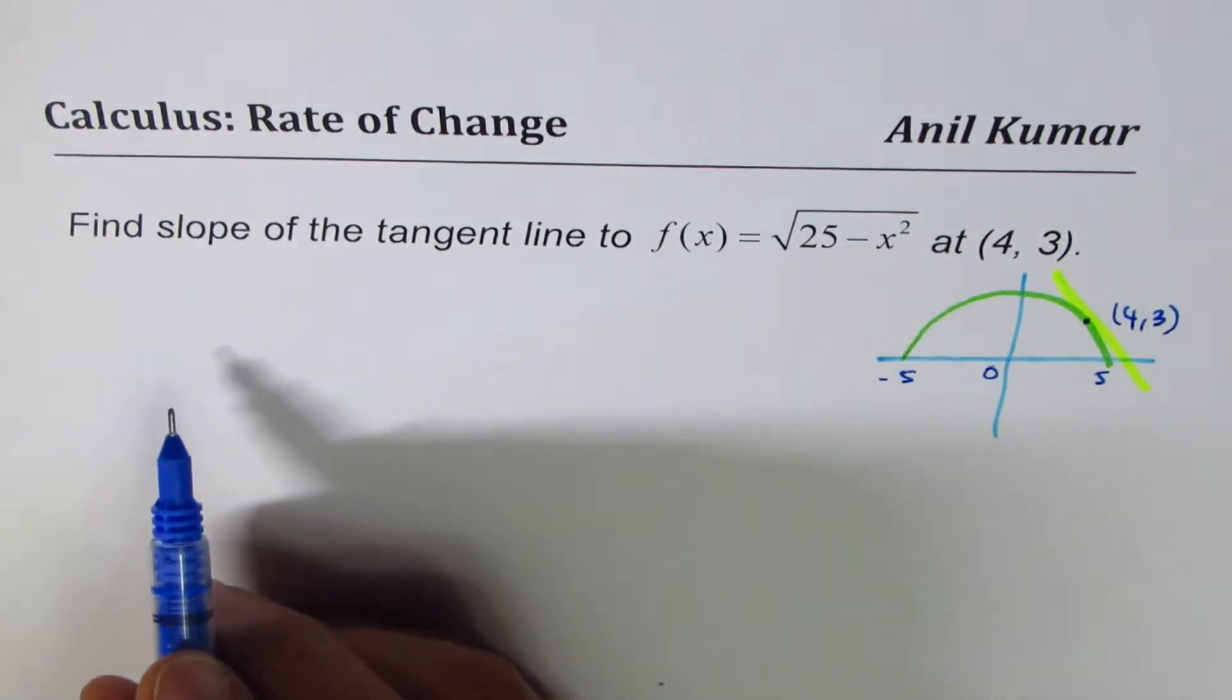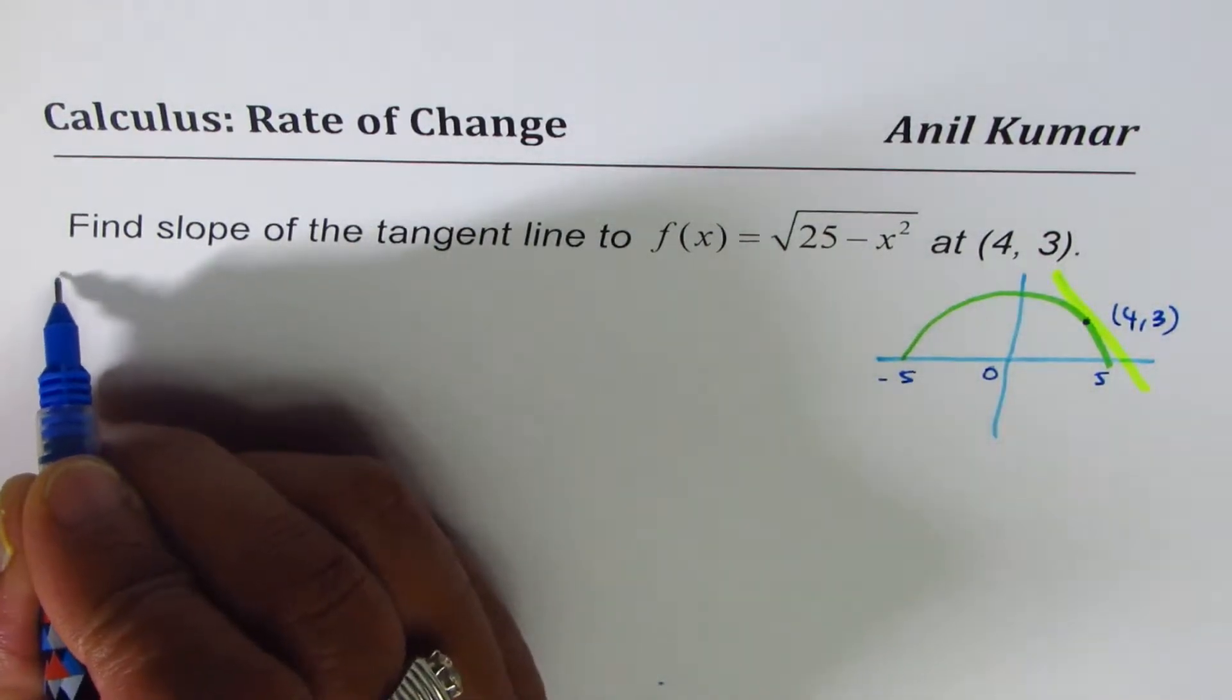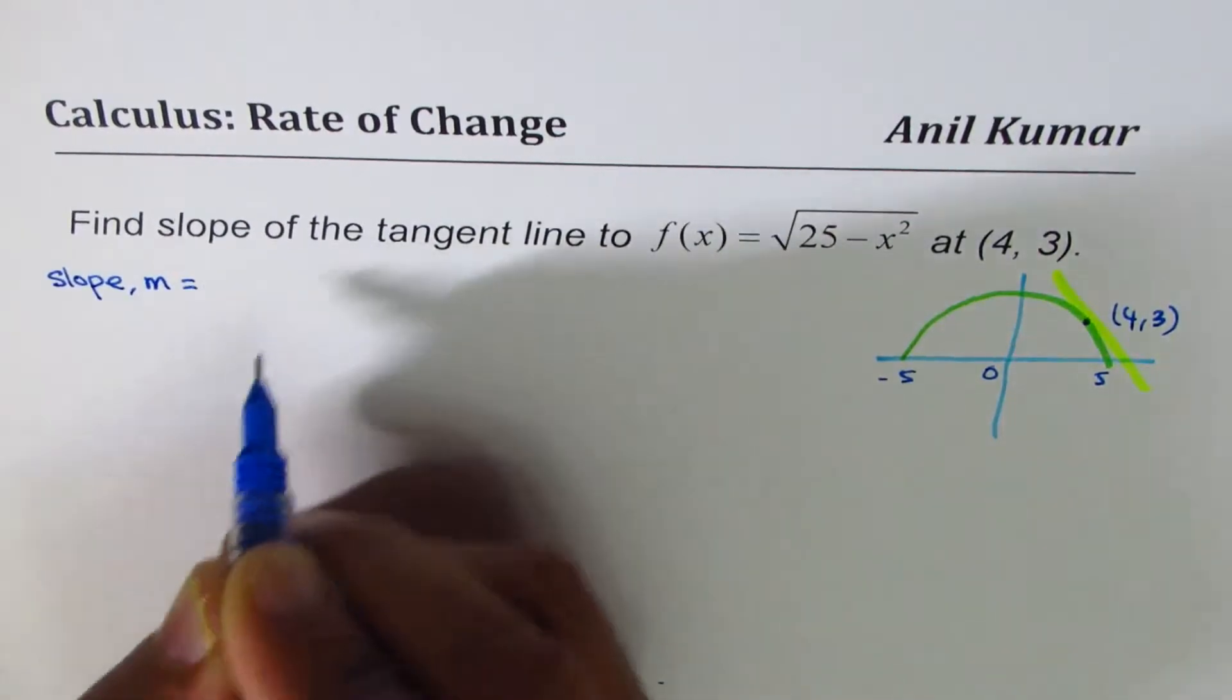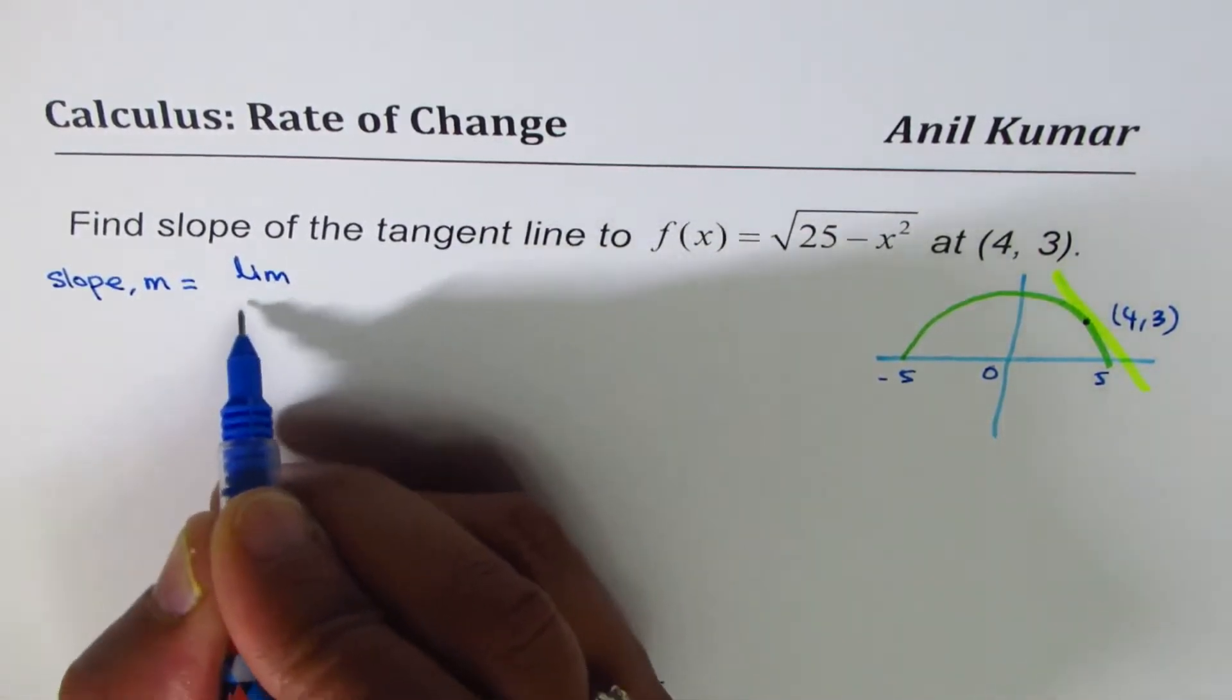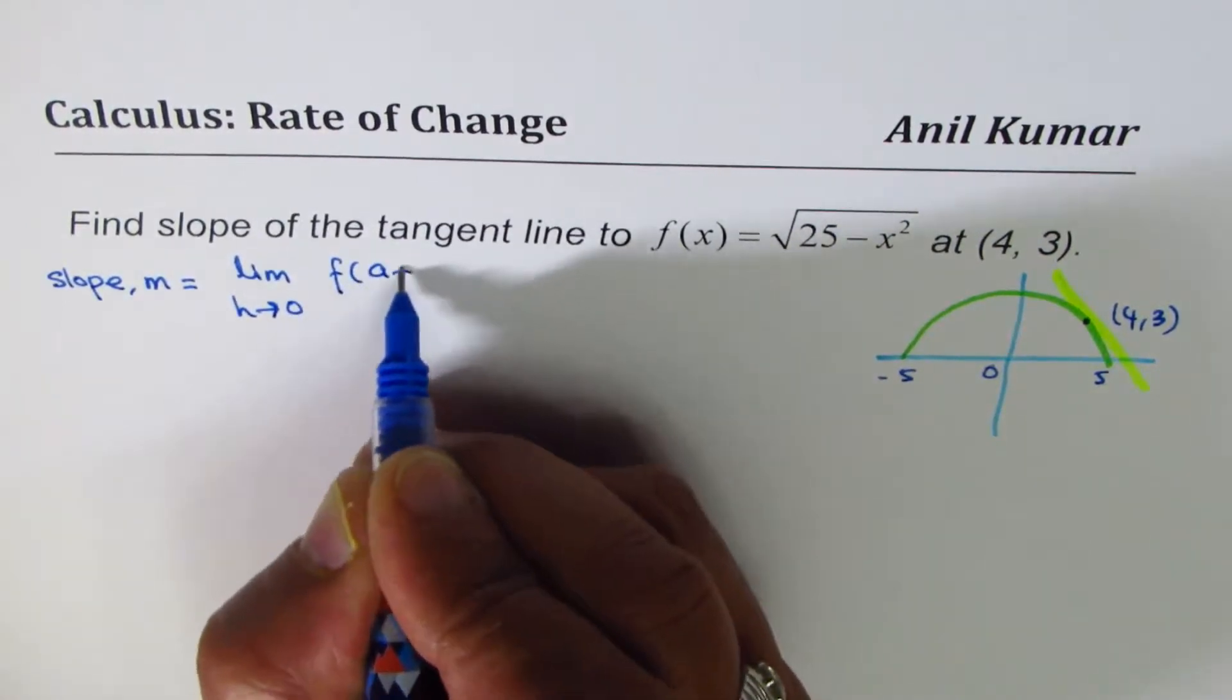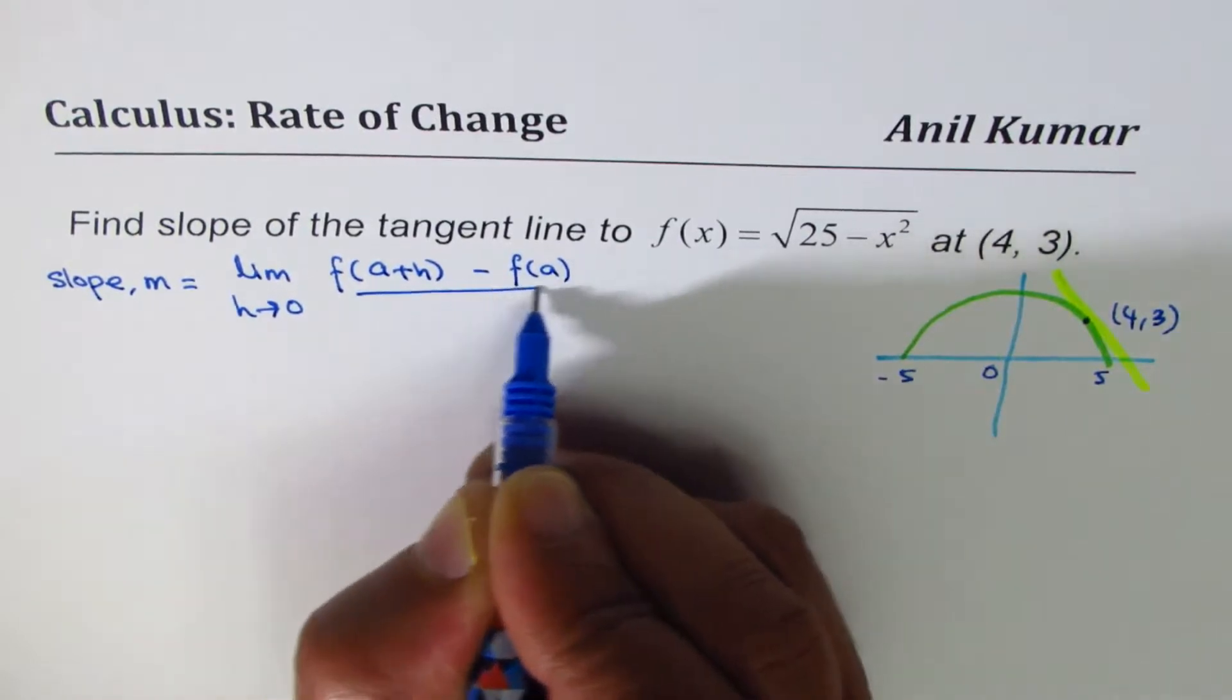The method which we are going to adopt here is called difference quotient method. So we say the slope m is equal to limit, h approaches 0, f(a+h) minus f(a) over h.